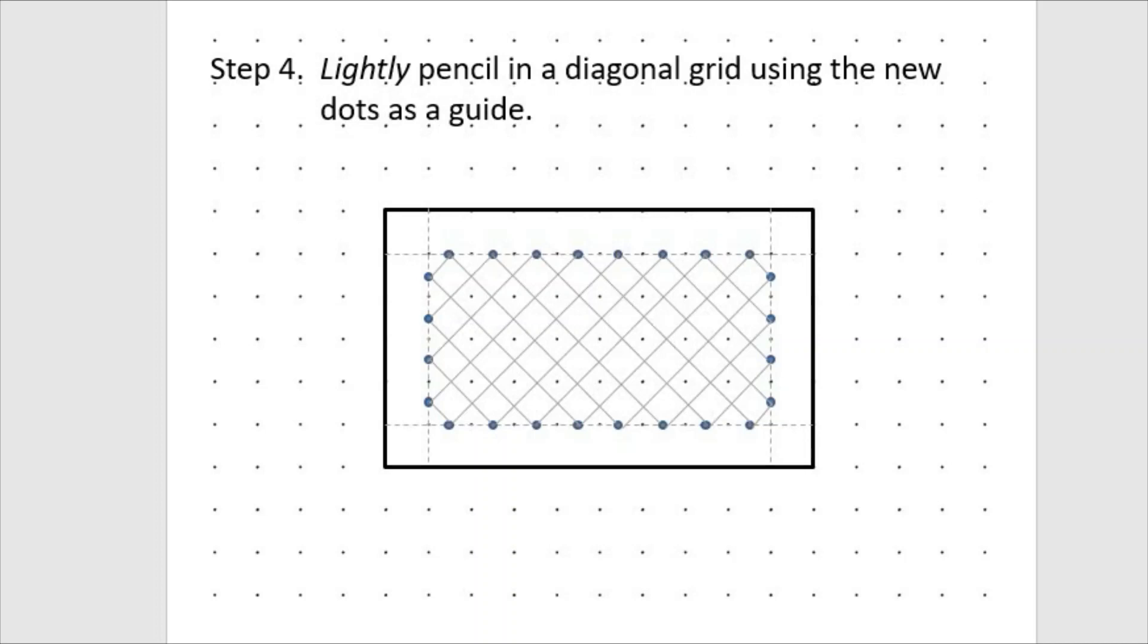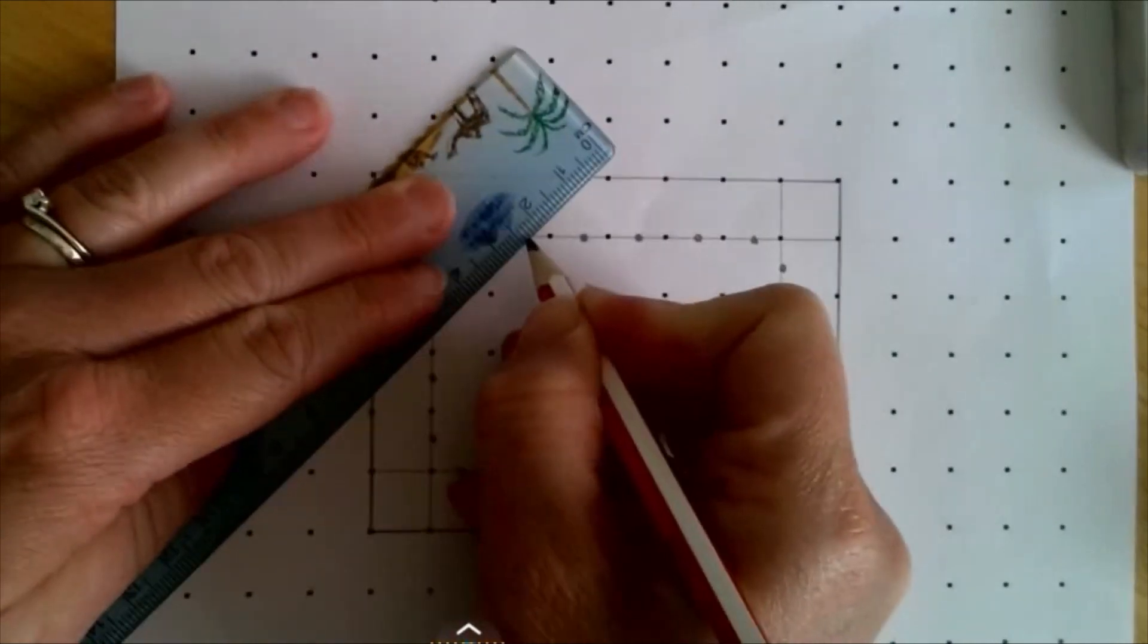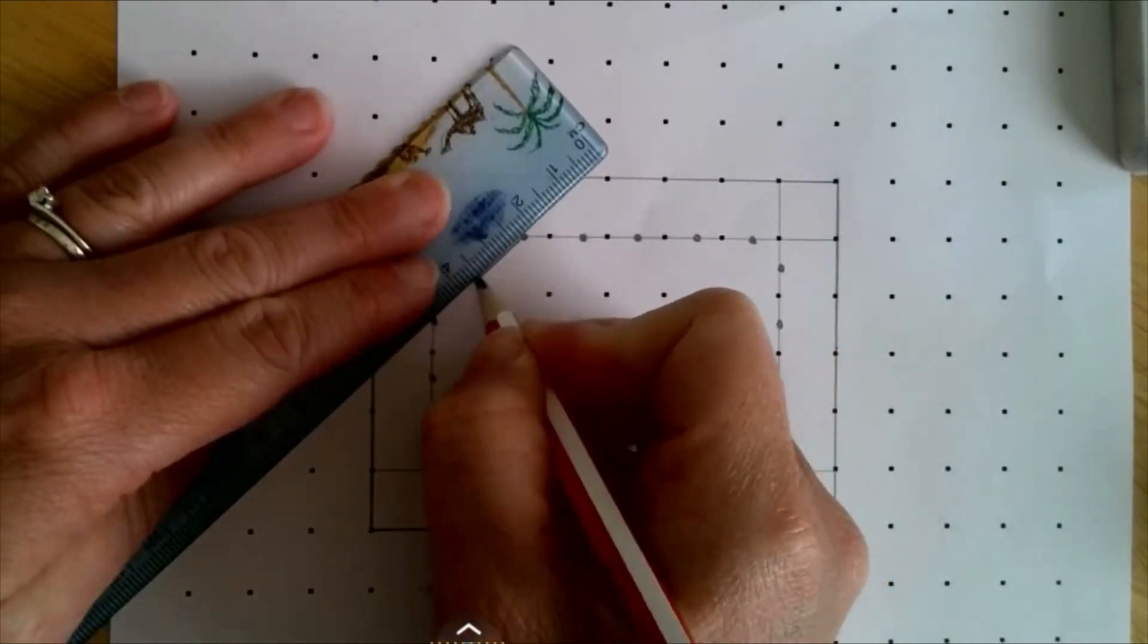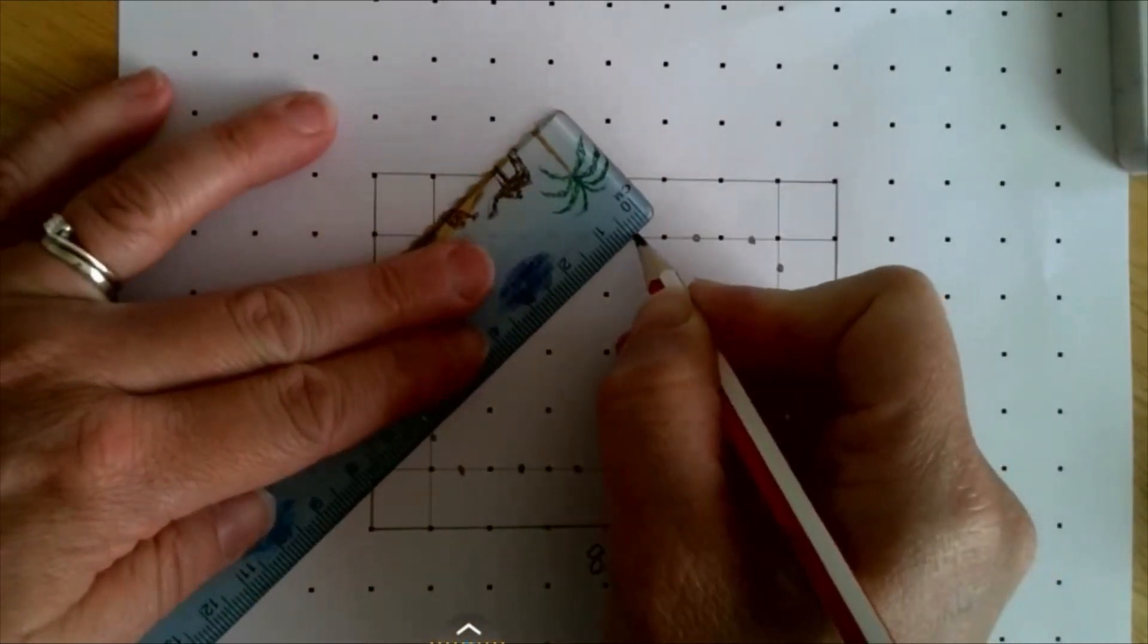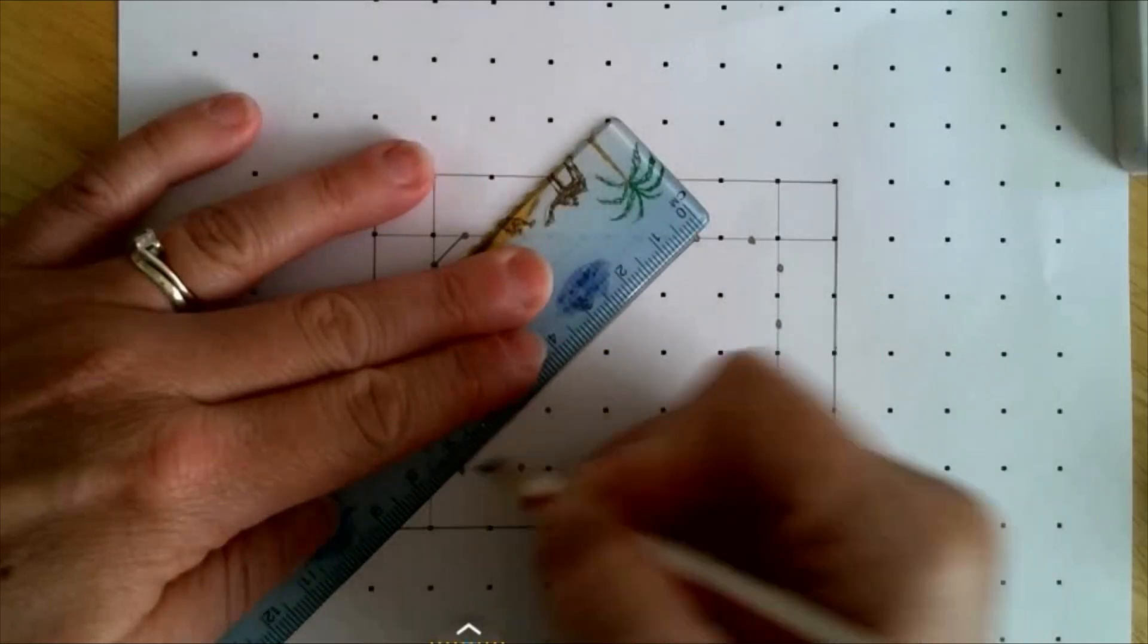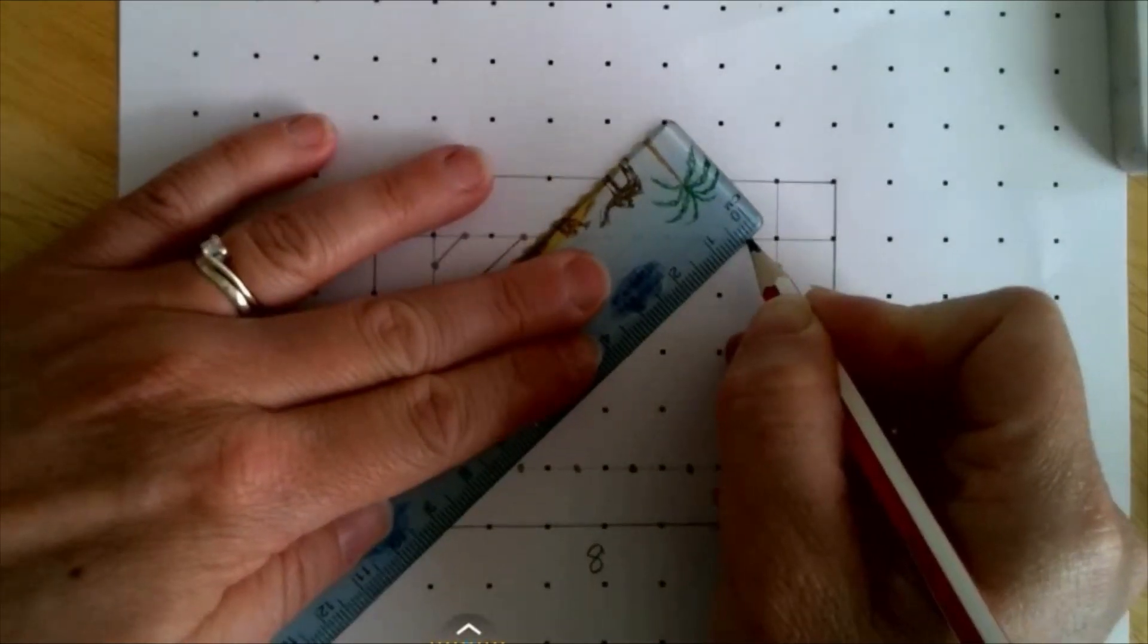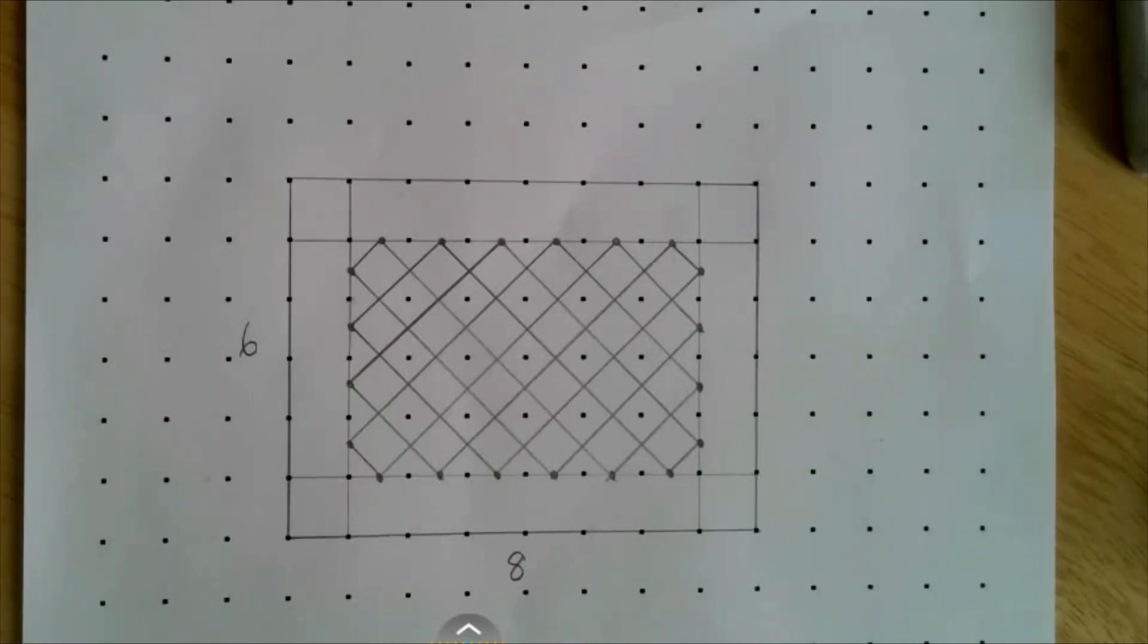Step four is now to lightly pencil a diagonal grid using the dots as a guide. So these are the new dots that you've just created. I'm going to do this. Your grid should now look like this.